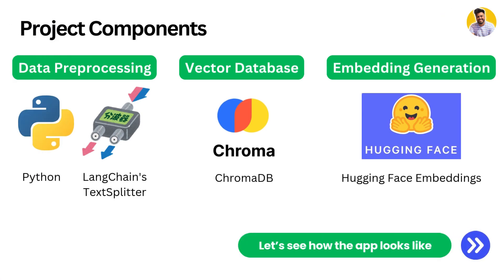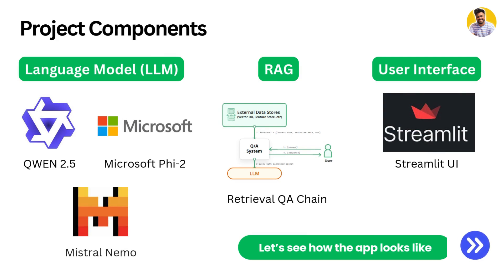Let me show you the components of this app. For data pre-processing, we use Python and LangChain's text splitter with chunking strategies. For the database, we use ChromaDB. For the embedding model, we use open-source Hugging Face embeddings. For the large language models, we use three LLMs. For external data, we use RAG, which builds a retrieval chain from ChromaDB to the LLM to provide context. For the interface, we use the Streamlit framework.